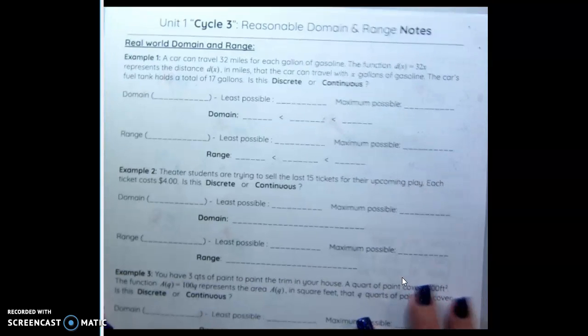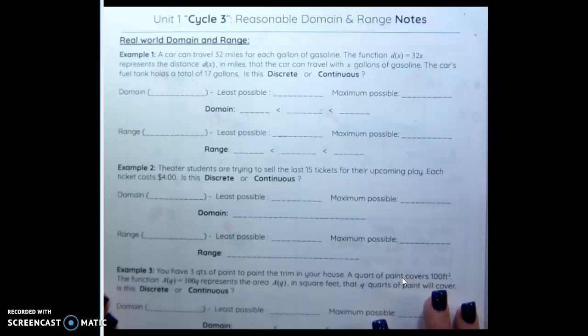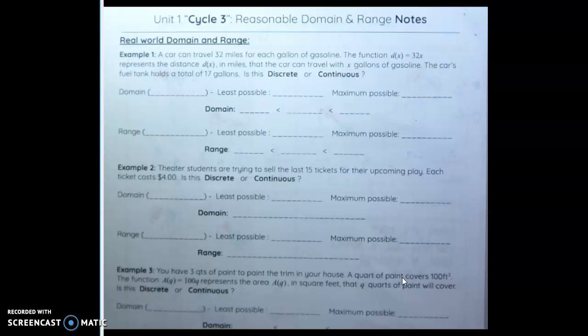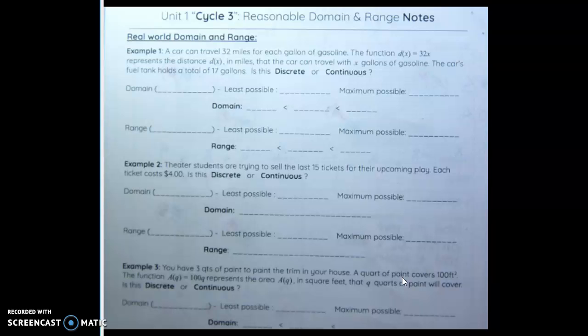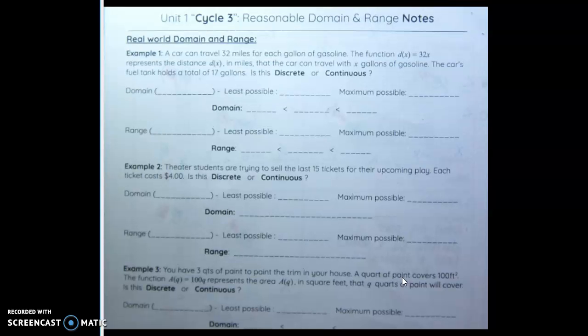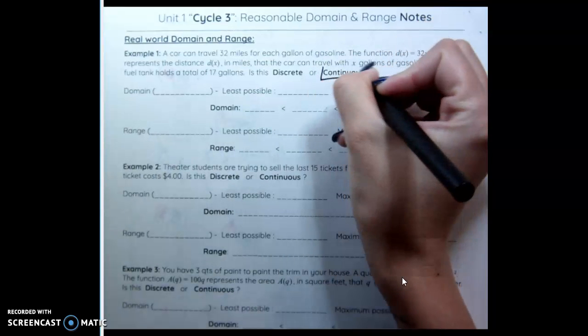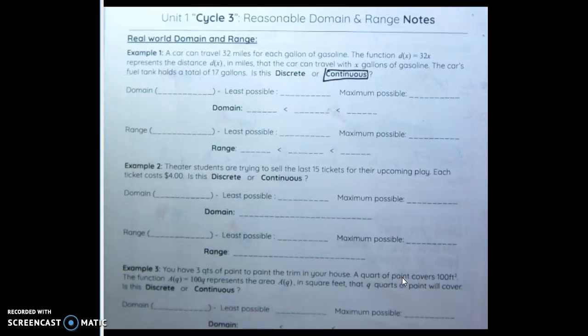On the back. These are real world scenarios, which we call word problems. So example 1. A car can travel 32 miles for each gallon of gasoline. The function d of x equals 32x represents the distance d of x in miles that the car can travel with x gallons of gasoline. What it's saying is you get 32 miles per gallon. X is how many gallons of gas you have. The car's tank holds a total of 17 gallons. Is this discrete or continuous? Discrete is situations where you either have something or you don't. You don't have partial value. But we can have half a gallon. So that means this is a continuous situation.